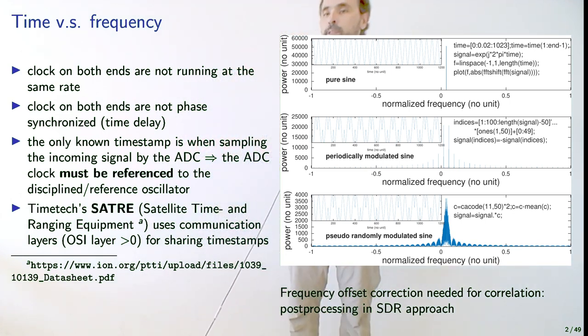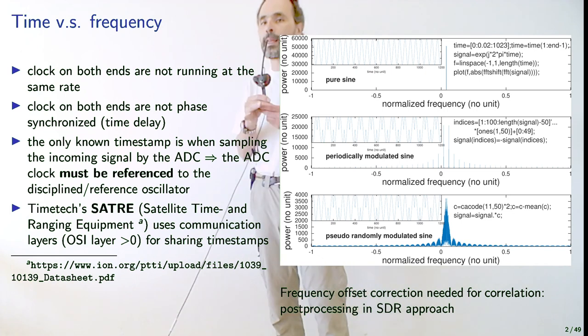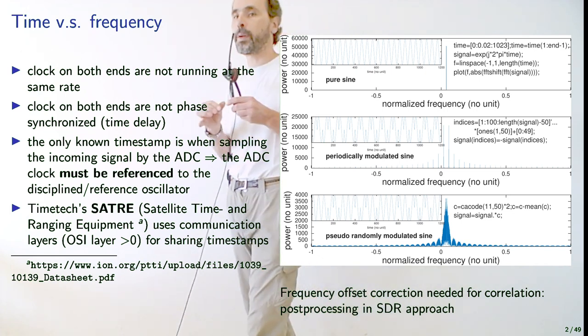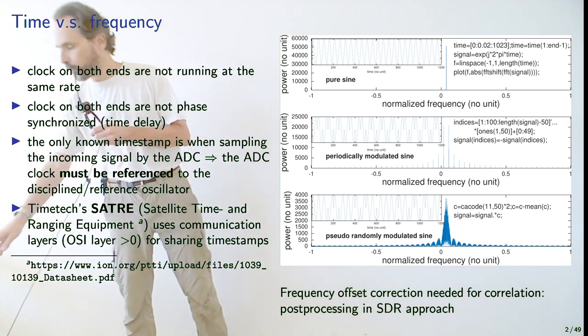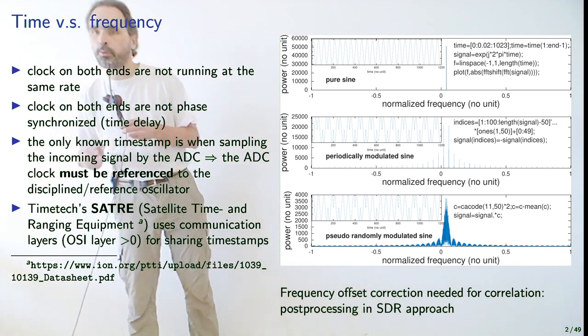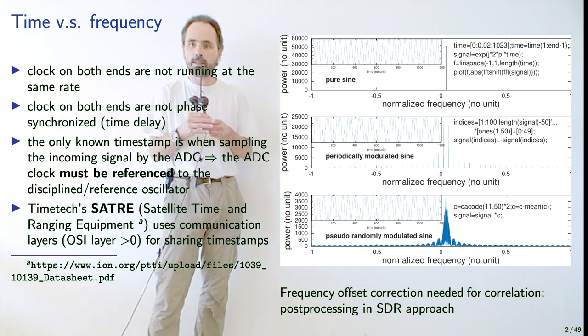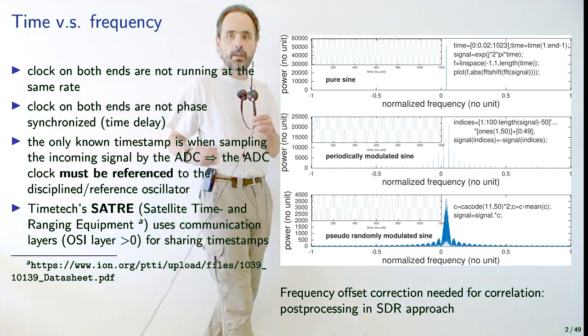You see the huge difference between frequency transfer and time transfer. Frequency is intrinsically a narrow-band information, whereas time transfer requires processing broadband signals — that's the big difference.